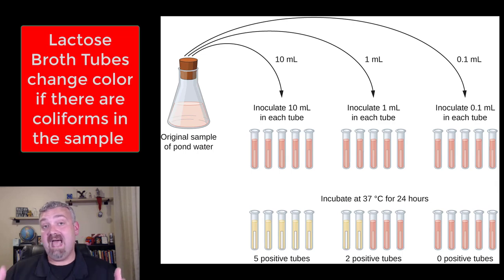The tubes that are used are actually called lactose broth tubes. They have the sugar lactose in them and coliforms can ferment lactose. If the coliforms are digesting the lactose in the sample, you're going to see a drop in pH. These are basically like pH test strips.